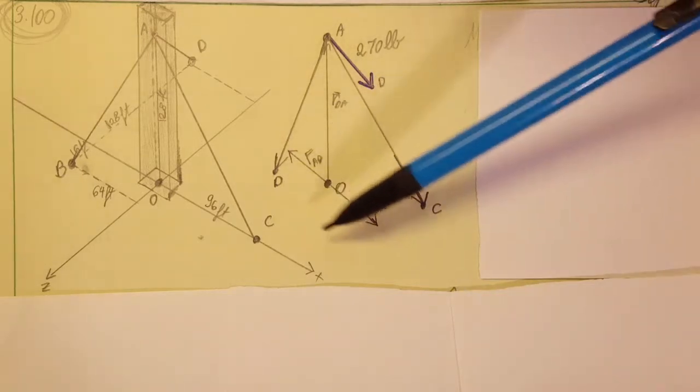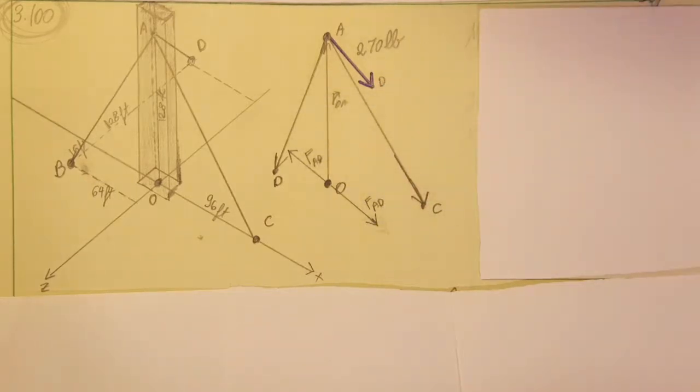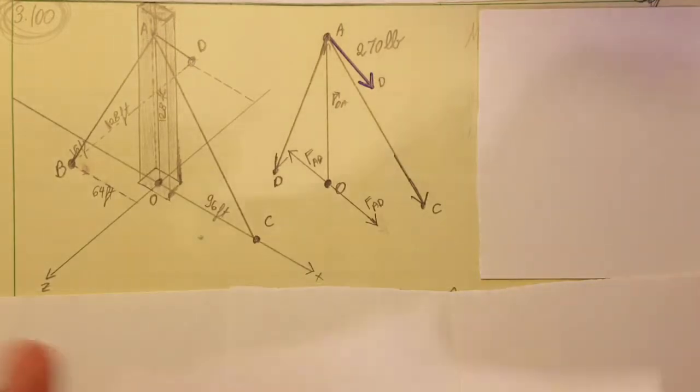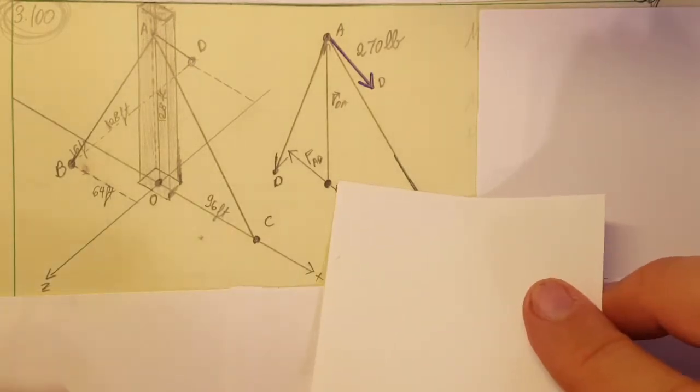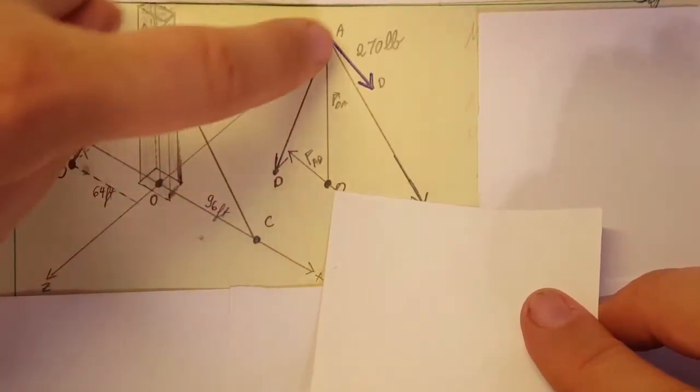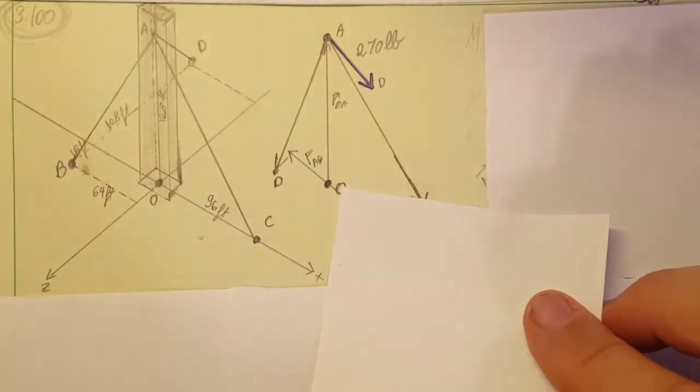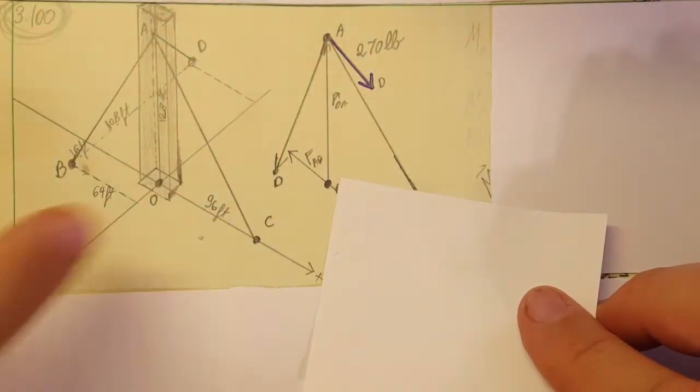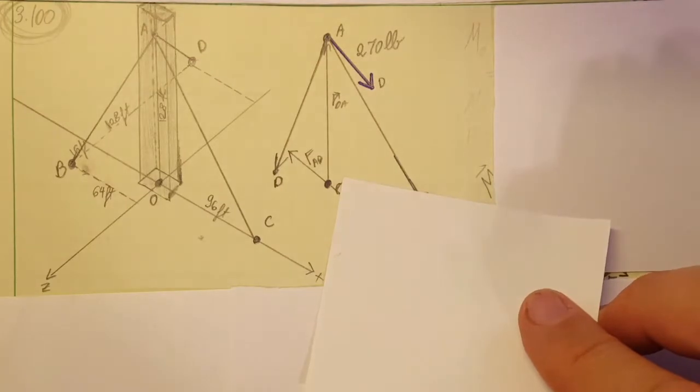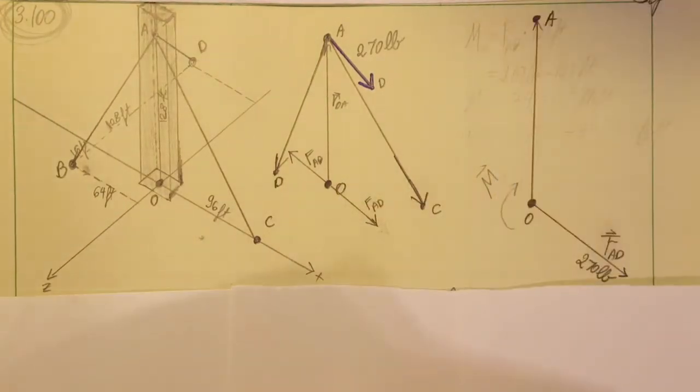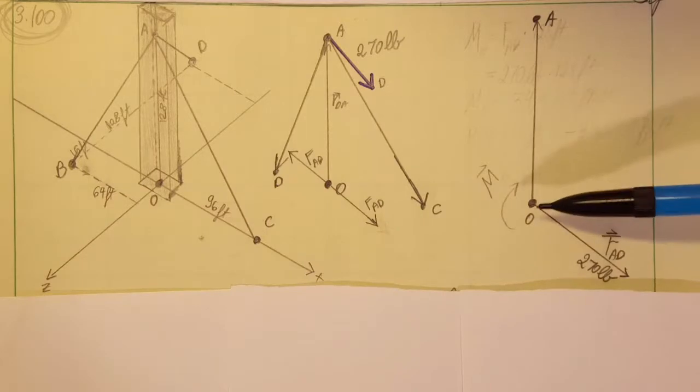But by ignoring this force right here, we can see that these two now give us a nice couple system. So with these two, we can calculate a moment. And when we're gonna redraw our system again, this is O and A, the antenna.